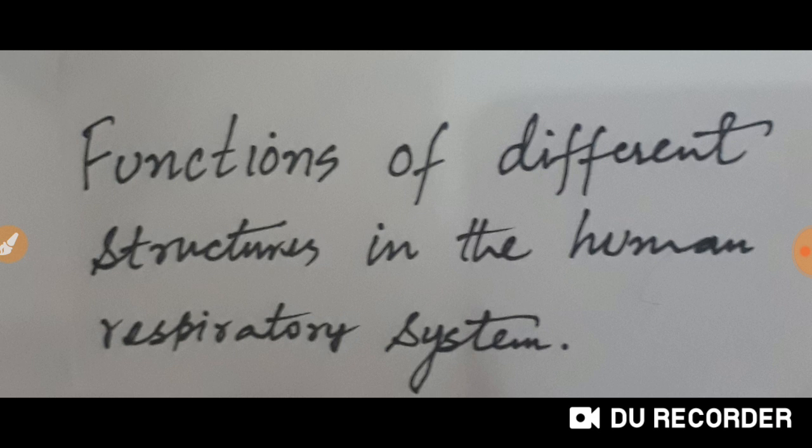Right lung has three lobes, so it will divide three times. One will go to one lobe, another to another, and the third to the third lobe. Then left lung has two lobes, so the bronchus will divide into two parts. One will go to one lobe, another to the other lobe.